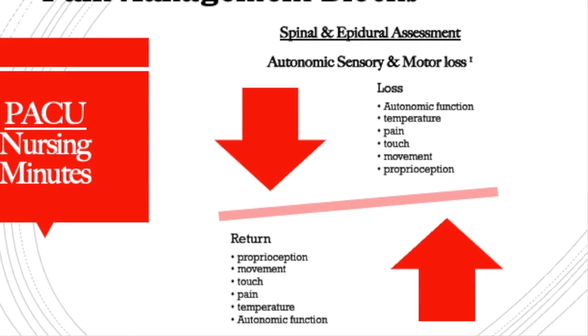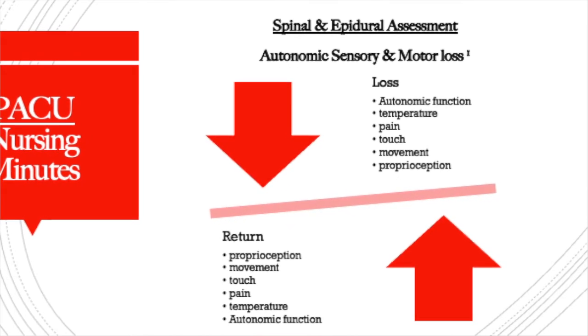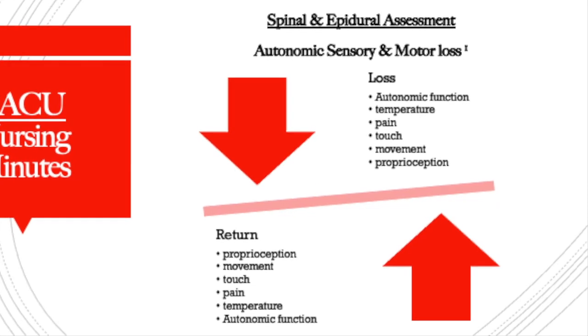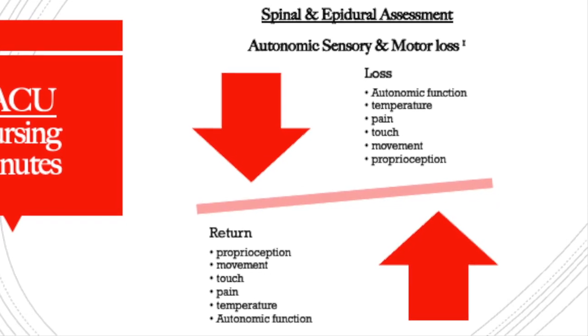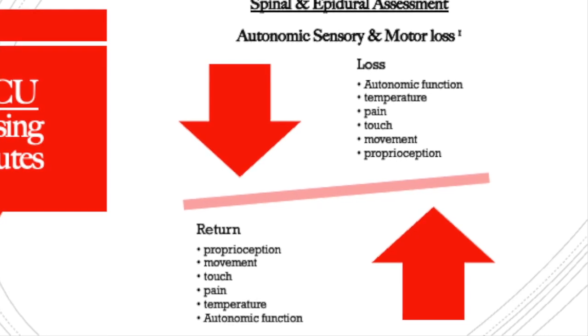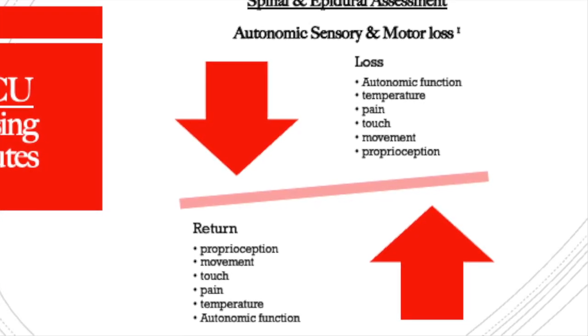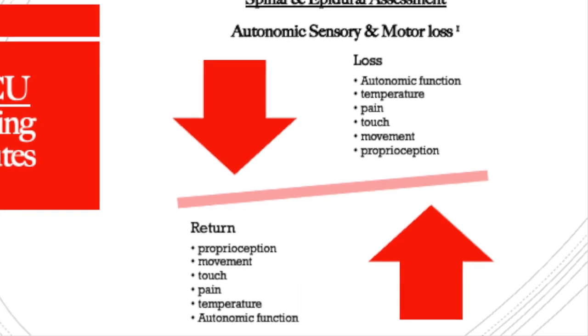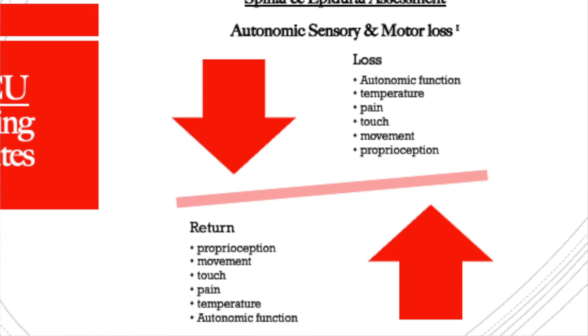When sensation and motor movement return, they return in the reverse order in which function was lost: proprioception first, then movement, then the sensation of touch, then pain, then temperature, and finally resumption of autonomic function including blood pressure control and bladder function. It is common for patients to regain motor function or sensation faster on one side than the other — that is not abnormal.